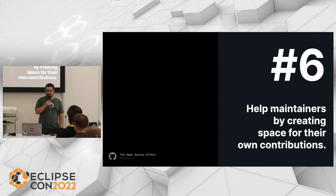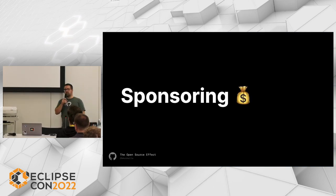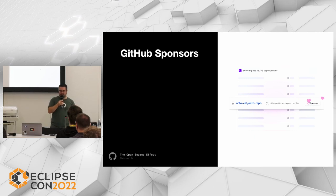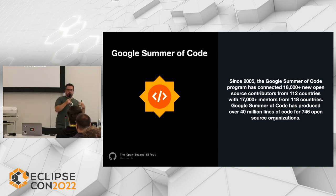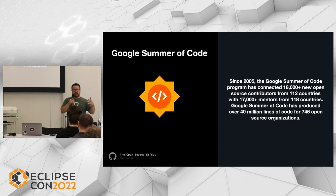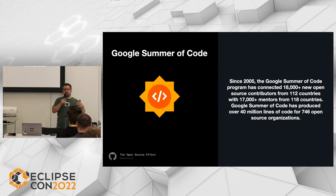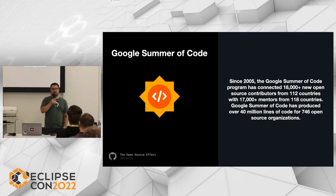Key lesson: help maintainers by creating space for their own contributions. Let's talk about sponsoring — has anyone ever sponsored an open source developer? You can use GitHub Sponsors, but even better there are programs like Google Summer of Code. There are direct sponsoring opportunities where you can sponsor a project or a person, and also indirect ways. In Google Summer of Code, an open source project like Eclipse says they need help, and Google every summer offers a number of students funding to work full-time on open source for three months.